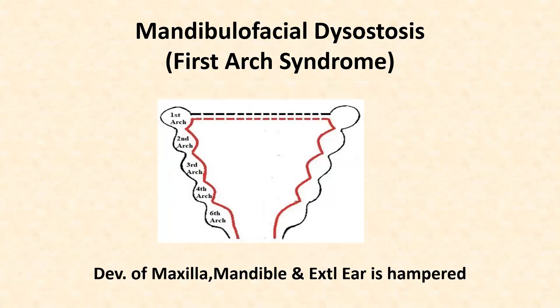Next is mandibulofacial dysostosis, or the first arch syndrome. The structures derived from the first pharyngeal arch may remain undeveloped on one or both sides. In this condition, there is defective development of the mandible, maxilla, and external ear; the prominence of the cheek is absent and the ear is displaced.